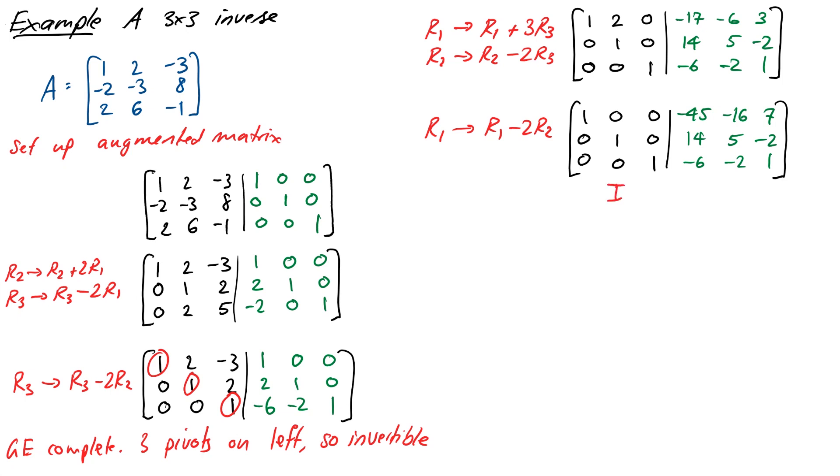Alright and here we have it. On the left there is the identity and on the right we have this slightly weird looking thing, [-45, -16, 7; 14, 5, -2; -6, -2, 1]. So what that means is that A inverse, where A was how we defined it at the start, is the matrix [-45, -16, 7; 14, 5, -2; -6, -2, 1]. So you can go ahead and check as an exercise that it is indeed true that A inverse times A is equal to the identity and it should also be true that A times A inverse, okay the multiplication in the other order, also gives you the identity.